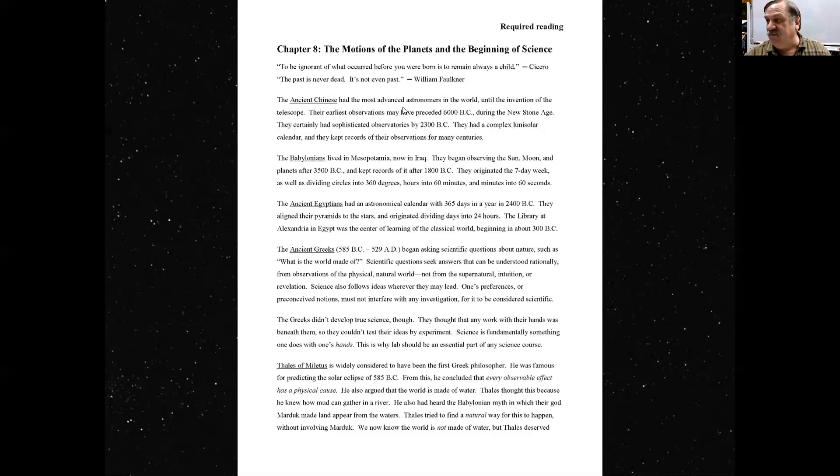The ancient Chinese had the most advanced astronomers and observatories in the world, until the invention of the telescope. The reason why people around the world in ancient times wanted to know about the sky was, it was how they could tell time, and also the time of year. Also, it was useful for navigation at sea. When a sailor is on a ship, if they get out of sight of land, the only landmarks are the sun, moon, and stars.